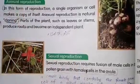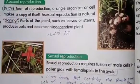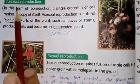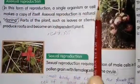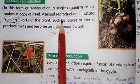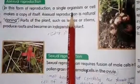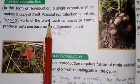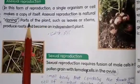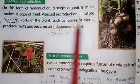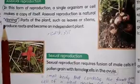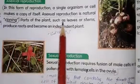What is asexual reproduction? It is the type of reproduction in which a single organism or cell makes a copy of itself. In this type of reproduction only one organism is involved, and it produces an identical copy of itself. Asexual reproduction is natural cloning, meaning it creates a copy.